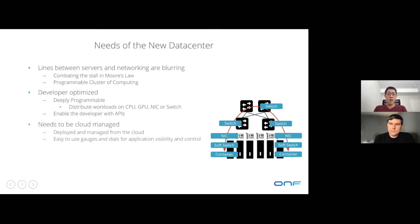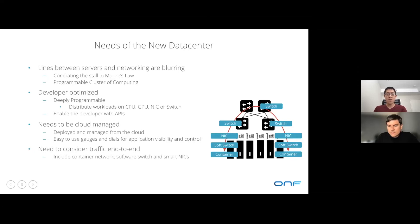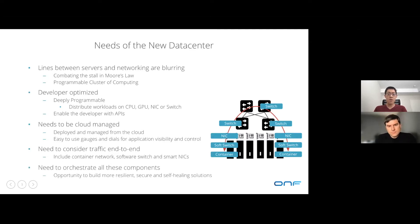The data center needs to be cloud-managed, meaning deployed, managed, and monitored by cloud platforms. It needs to provide easy access to gauges and dials for application visibility and control. We also now have to consider network traffic end-to-end, including not only underlay switches but also container networks, software switches, and smart NICs on the host. Finally, all these components need to be centrally orchestrated, which can bring huge benefits in terms of global visibility and the ability to optimize.